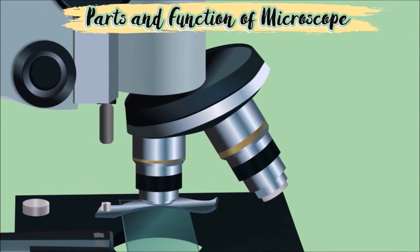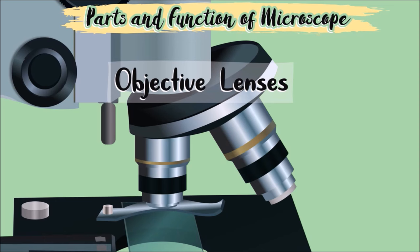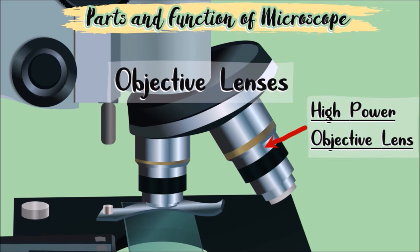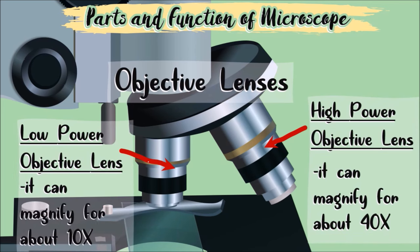Next are these parts. These are called objective lenses. The longer one is called high power objective lens, which is able to magnify for about 40 times. The shorter one is called low power objective lens, which can magnify specimen for about 10 times.